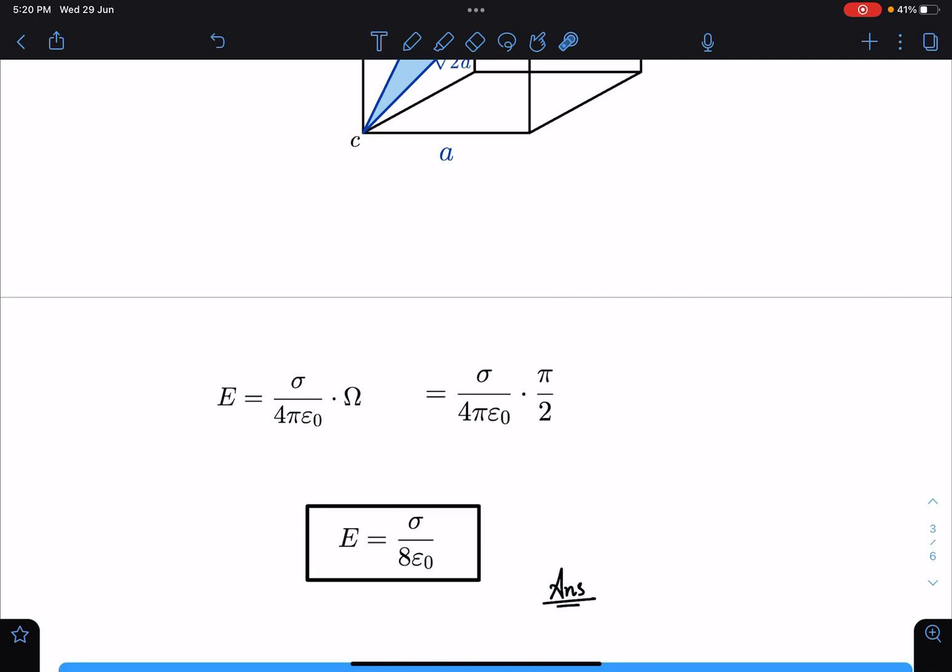I just substitute this value here and the E value I am getting is σ/4πε₀ times π/2, which gives me σ/8ε₀. So k is 8 in this particular problem.